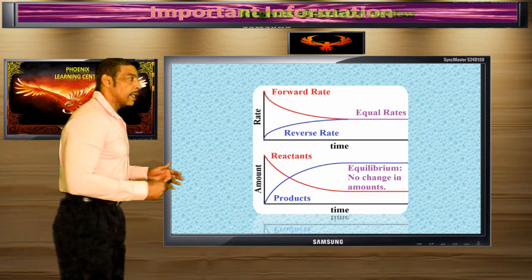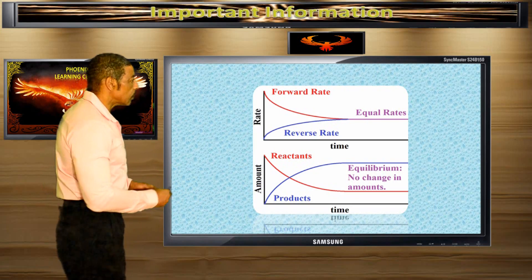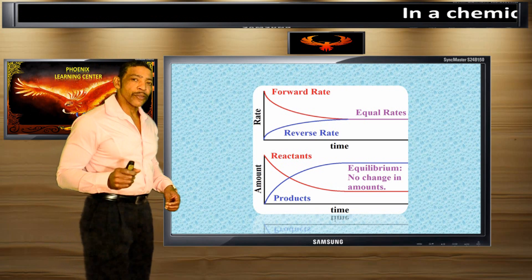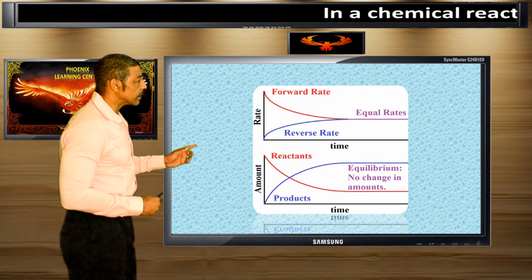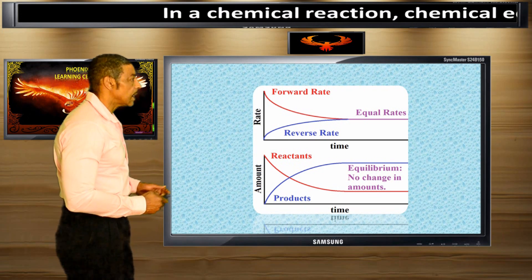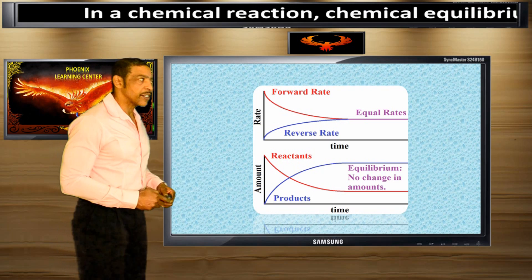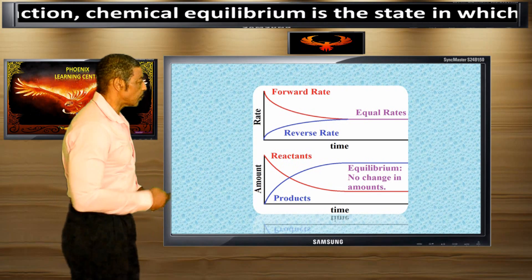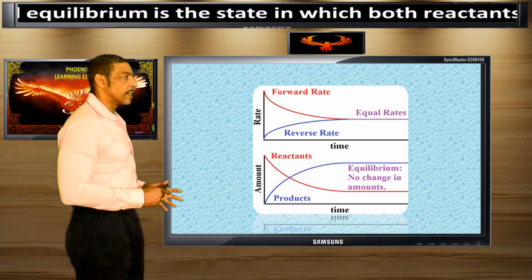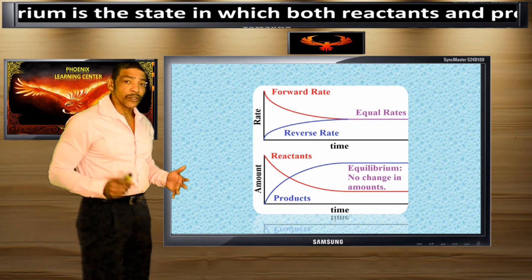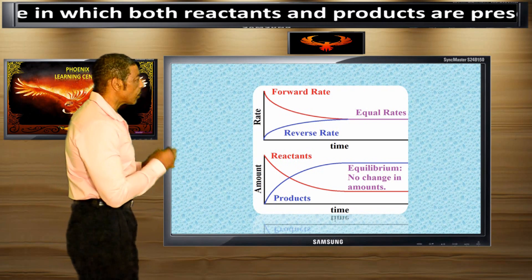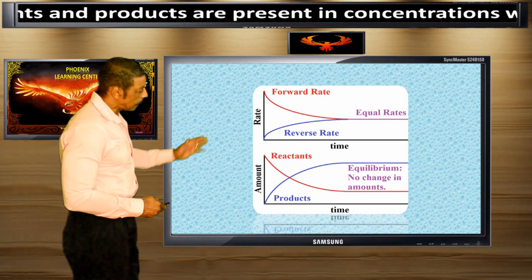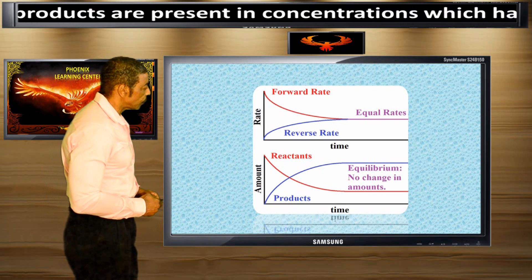In a chemical reaction, chemical equilibrium is a state in which both the reactants and products are present in concentrations which have no further tendency to change with time. Usually this state results when the forward reaction proceeds at the same rate as the reverse reaction.